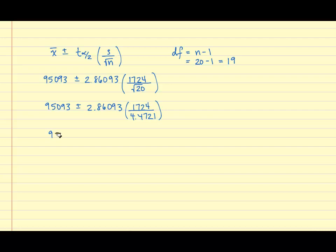Next, I'm going to divide and take 1724 divided by 4.4721. And once I take 1724 divided by 4.4721, I obtain 385.501.